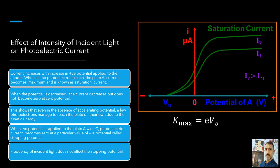We first keep plate A at some positive accelerating potential with respect to plate C, and illuminate plate C with light of fixed frequency and fixed intensity I1. We next vary the positive potential of plate A gradually and measure the resulting photocurrent each time. It is found that the photoelectric current increases with increase in accelerating potential. At some stage, for a certain positive potential of plate A, all the emitted electrons are collected by plate A and the photoelectric current becomes maximum, or saturates. If we increase the accelerating potential further, the photocurrent does not increase. This maximum value of the photoelectric current is called the saturation current, which corresponds to the case when all the photoelectrons emitted by the emitter plate C reach the collector plate A.